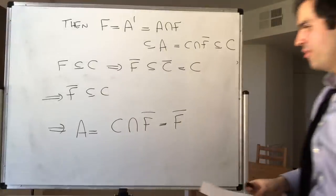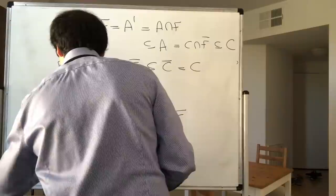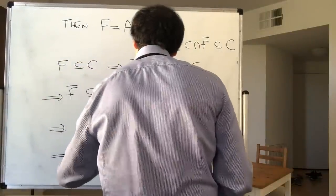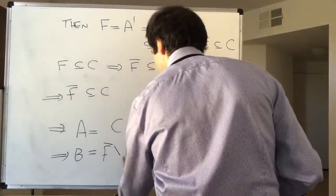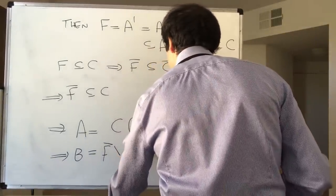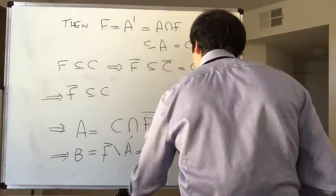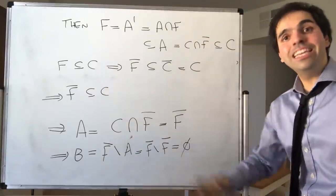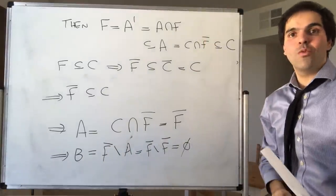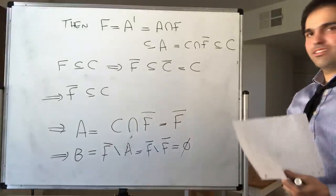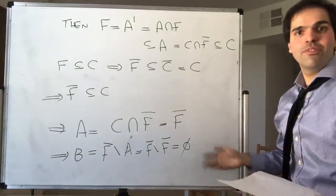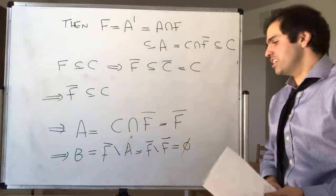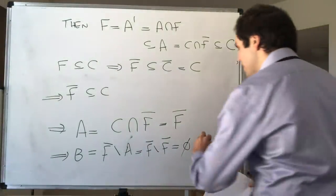Therefore B = f̄ \ A = f̄ \ f̄ = ∅. But that contradicts the fact that both A and B were non-empty in the separation. That's why we get a contradiction, and that's why f̄ is connected.